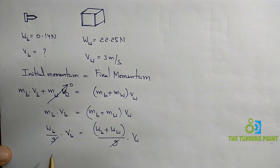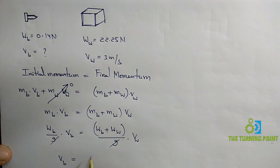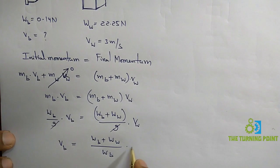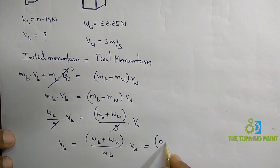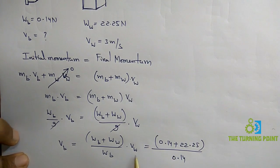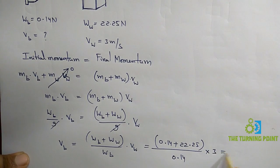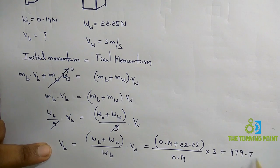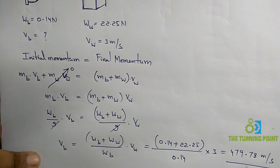Solving for V_B: V_B = (W_B + W_W) divided by W_B, multiplied by V_W. Substituting values: (0.14 + 22.25) divided by 0.14, multiplied by 3 meters per second. Simplifying gives the velocity of the bullet as approximately 479.78 meters per second.